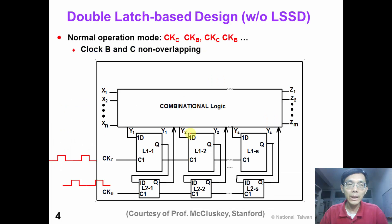This slide shows a double latch-based design before DFT insertion. In this design, we have three pairs of master-slave latch. Each pair of latch stores one bit of data. In normal operation, when C clock is high, the data from the combinational logic is stored in the master latch L1. When clock B is high, the data is transferred from the master latch to the slave latch and also applied to the combinational logic.